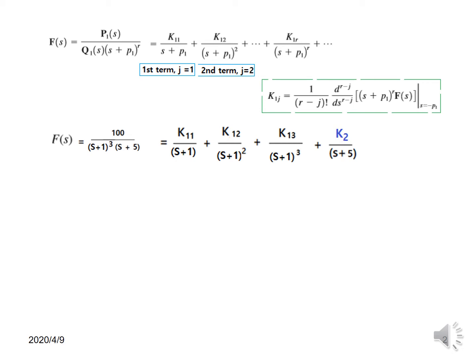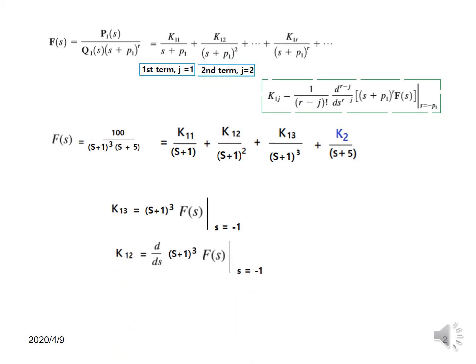We start from the highest power, so we find k13 first. For k13, we multiply F(s) by the denominator (s+1)³, apply the condition s+1=0 (i.e., s=−1), and calculate. For k12 we go down one level, differentiating once with respect to s and applying the same condition. As we go further down, we increase the order of differentiation.